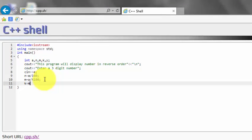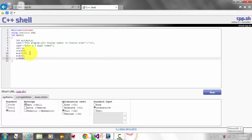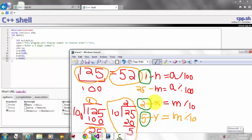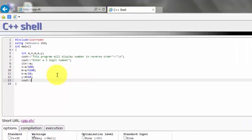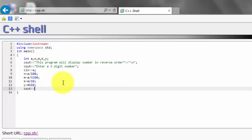So k equals to m divided by 10, y equals to m percent by 10. We are done over here. Now we know that y has 5, k has 2, and n has 1. Right? So c out y, k, n.